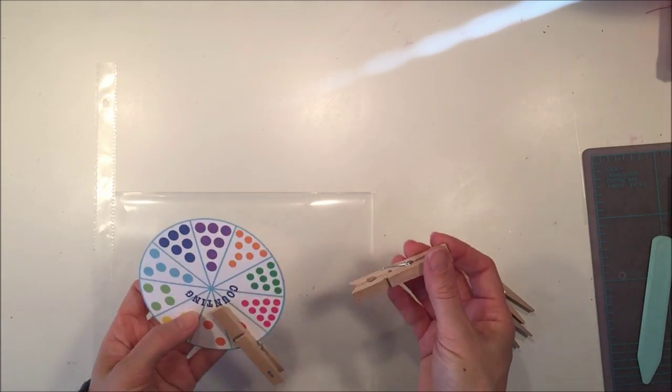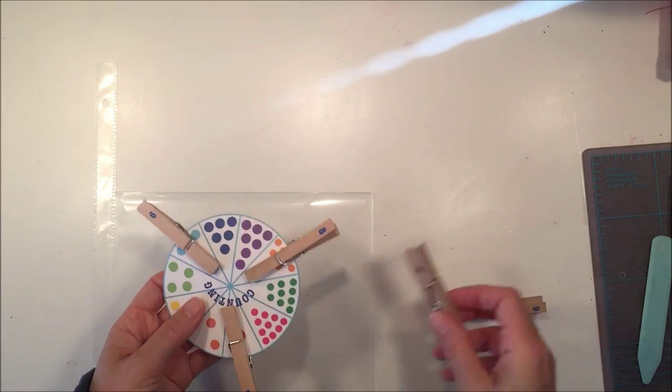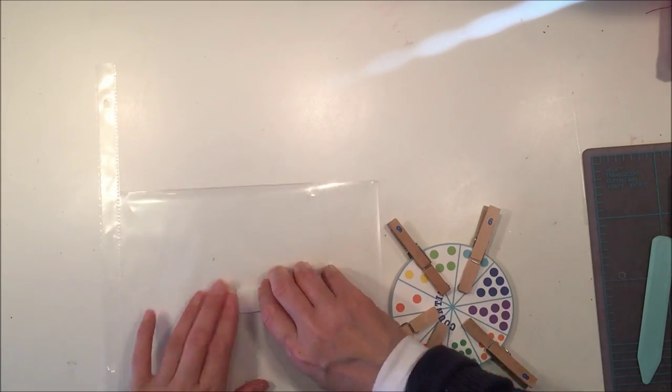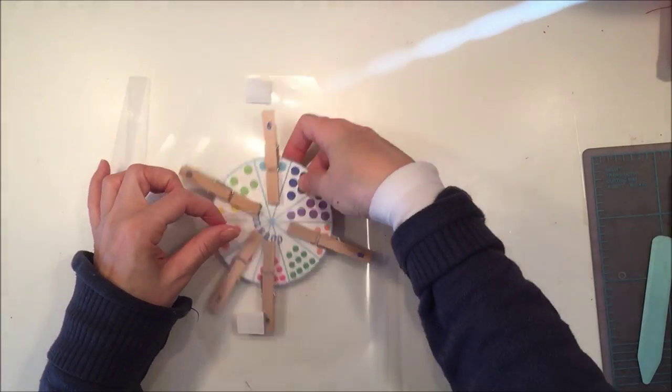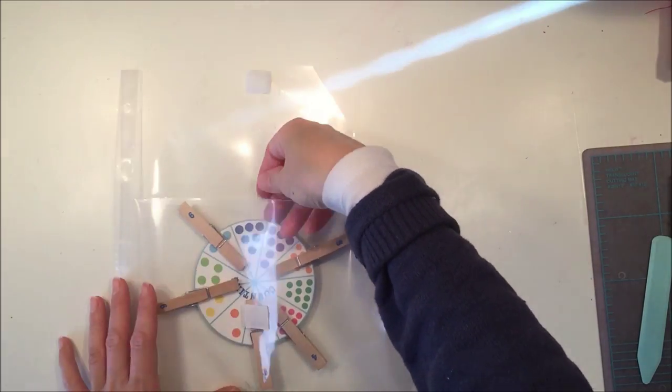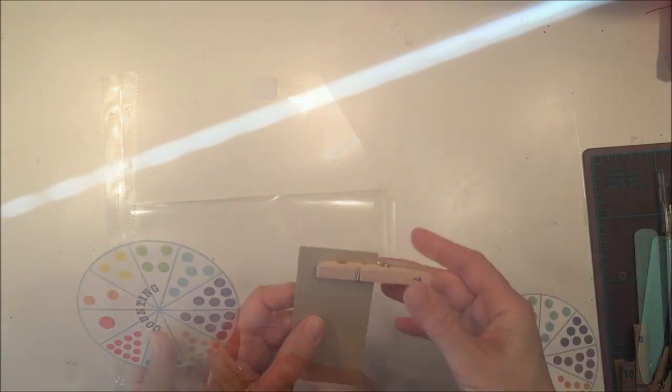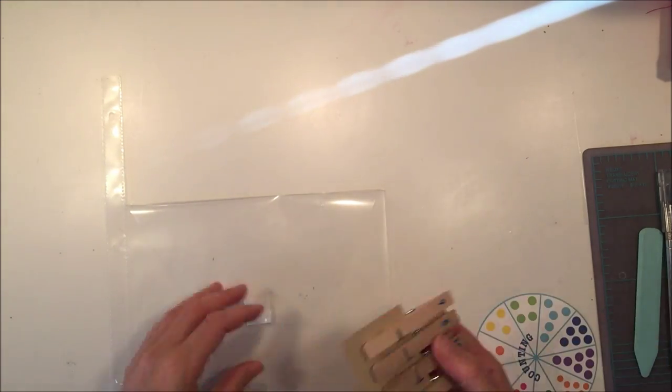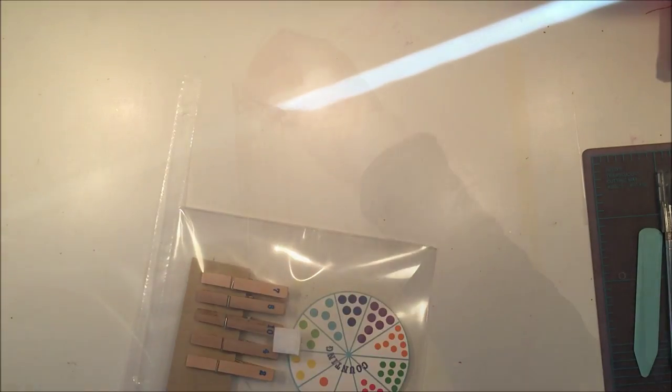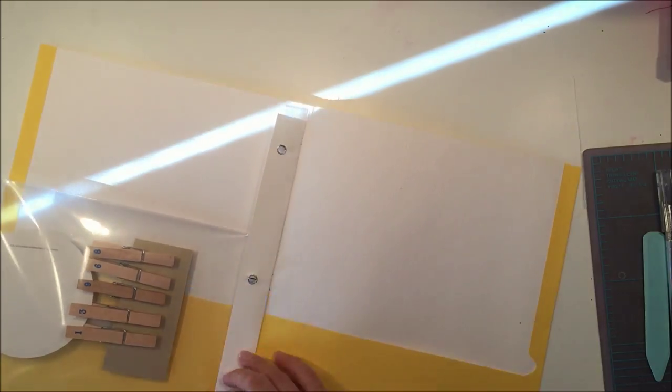Now I want to put the whole project inside the pocket, and with the clothespins around them, it didn't quite fit inside the pocket. So I took the clothespins off, put them all on a small piece of cardstock, and then put the whole thing inside the pocket, and it worked perfectly.